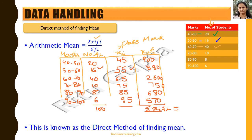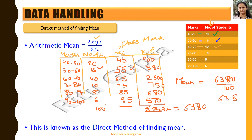The total is 100 students, and the summation of xi·fi comes out to be 6380. So the mean equals 6380 divided by 100. For this group of 100 students, the mean marks is 63.8. This is the mean marks of this set of data.